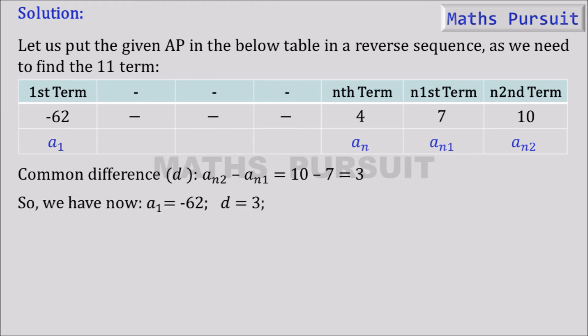So we have now a₁ is equal to -62, d is equal to 3, and we need to find a₁₁.